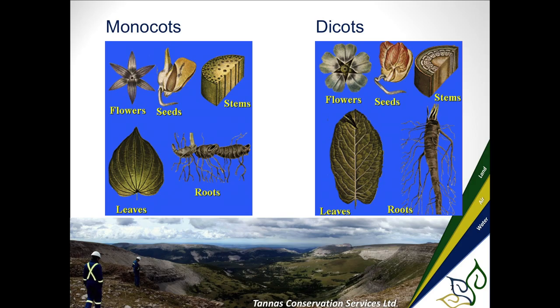The main feature of monocots is one cotyledon emerging from the seed versus two. If you're working with seed, that's something you'll look at a lot, but if you're outside in a crop field, native grassland, or forest, you won't be paying attention to that. Also look at the flowers — monocot flowers are grouped in threes and sixes, while dicots are in groups of fours and fives.